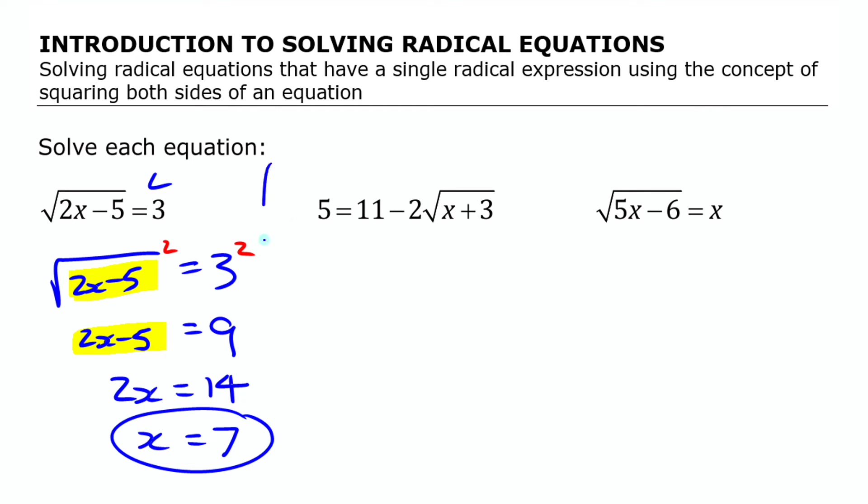We'll look at the second one here now. We're going to use the same technique. But we aren't going to be able to square it as is right now, because this square root is not all by itself on one side. Over here we had a single square root expression on one side and a single value on the other. Here we have more terms. So we need to isolate the square root sign first, this radical expression right here.